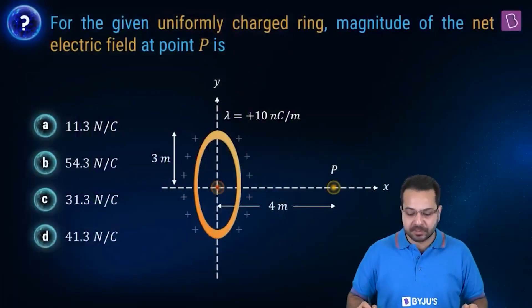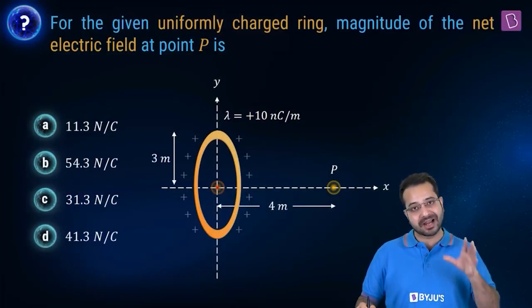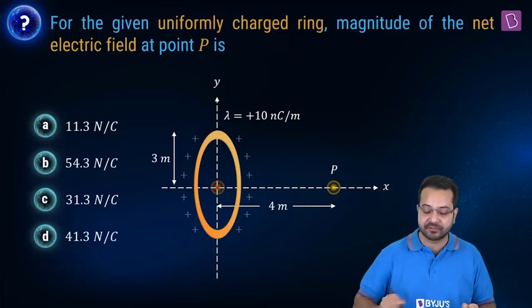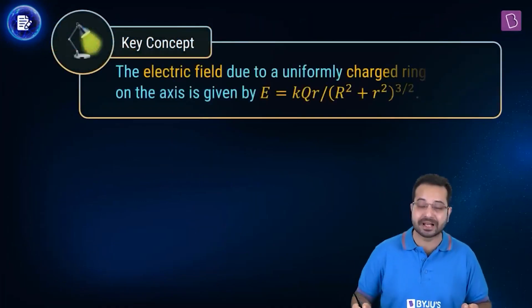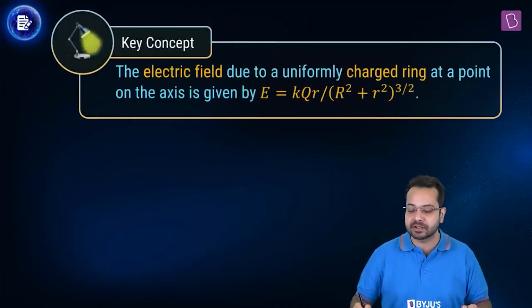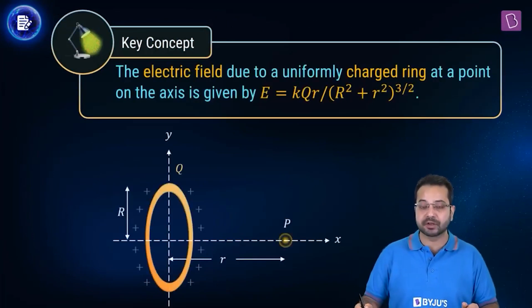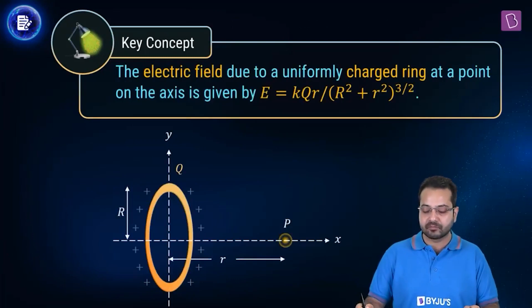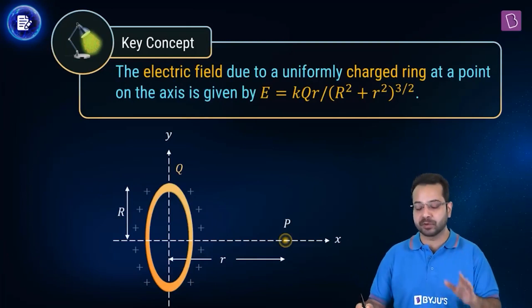For the given uniformly charged ring, the magnitude of the net electric field at point P is? We have a uniformly charged ring and we need to find the electric field at an axial point. The key concept is that the electric field due to a uniformly charged ring at a point on the axis is given by E = KQr / (R² + r²)^(3/2).